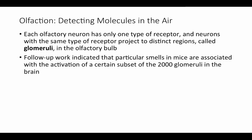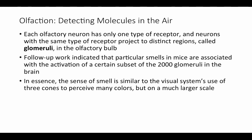Each olfactory neuron has only one type of receptor, and neurons with the same type of receptor project into distinct regions called glomeruli in the olfactory bulb — every axon of every neuron sensitive to a particular chemical is routed to the same place in the brain. Follow-up work indicated that particular smells in mice are associated with the activation of a certain subset of the roughly 2,000 glomeruli. This suggests it is the particular combination of receptors activated that gives you the exact smell you're detecting — more like the visual system blending three receptor signals than the discrete receptor types of taste.